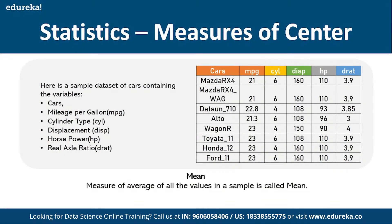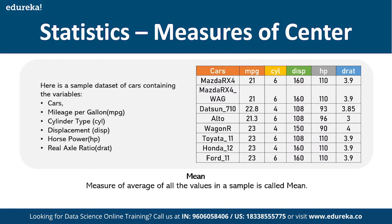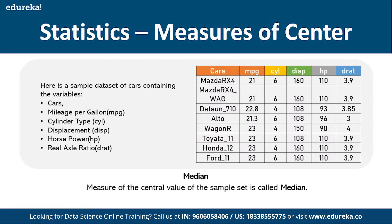Measures of central tendency: for example, if a class teacher is asked about the average class mark, they won't list every student's score — they'll give one average number representing the entire class. That average is the arithmetic mean in statistics. Mean is highly influenced by outliers, and it's calculated by summing all values and dividing by the count.